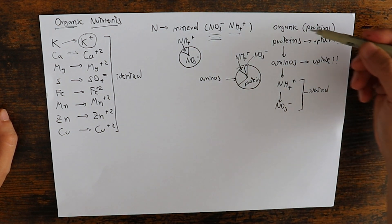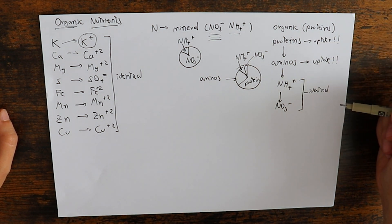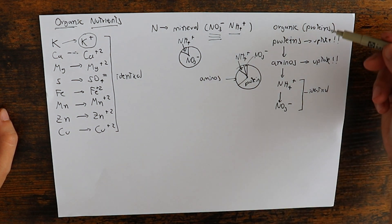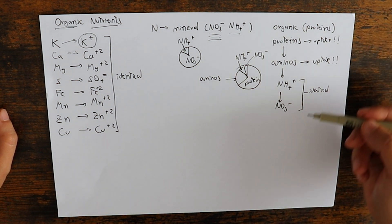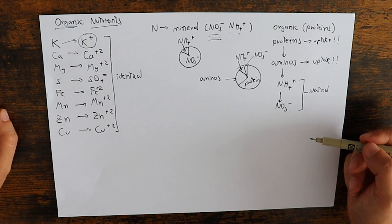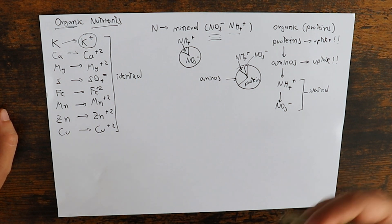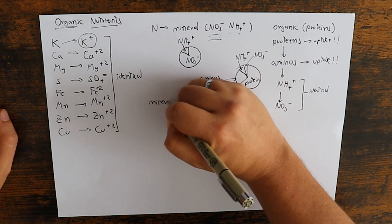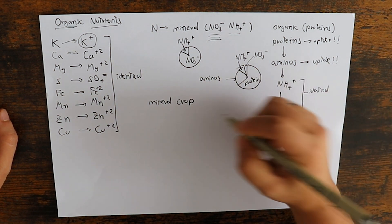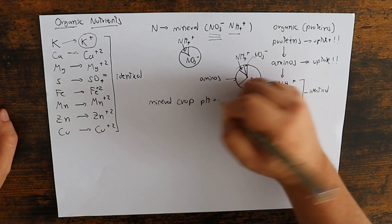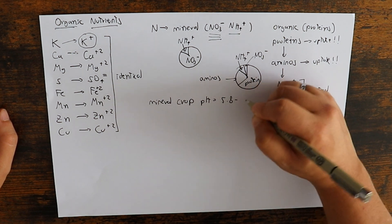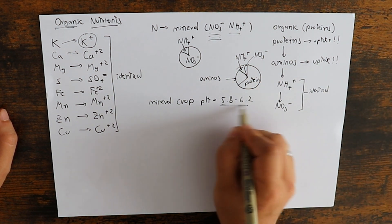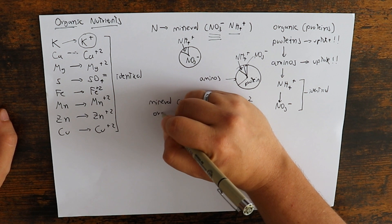It is also interesting to note that this process here is carried out by what we call nitrifying bacteria which are the bacteria that carry out this entire process of turning proteins into nitrate, and this process only happens at relatively high pH. So this is why we have in a mineral grown crop, we have the pH is usually between 5.8 and 6.2, so it's kept in this range ideally.